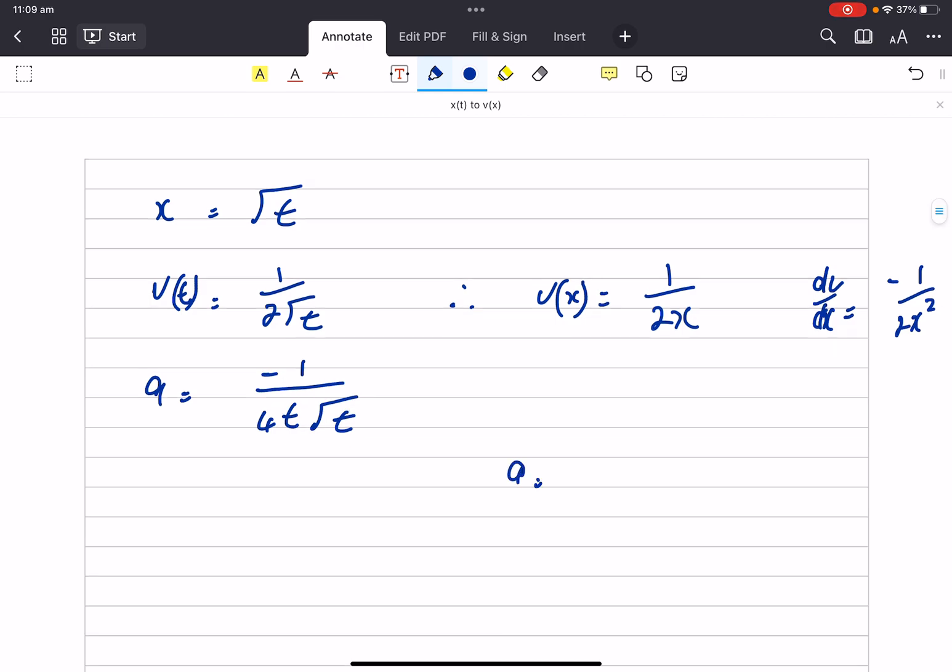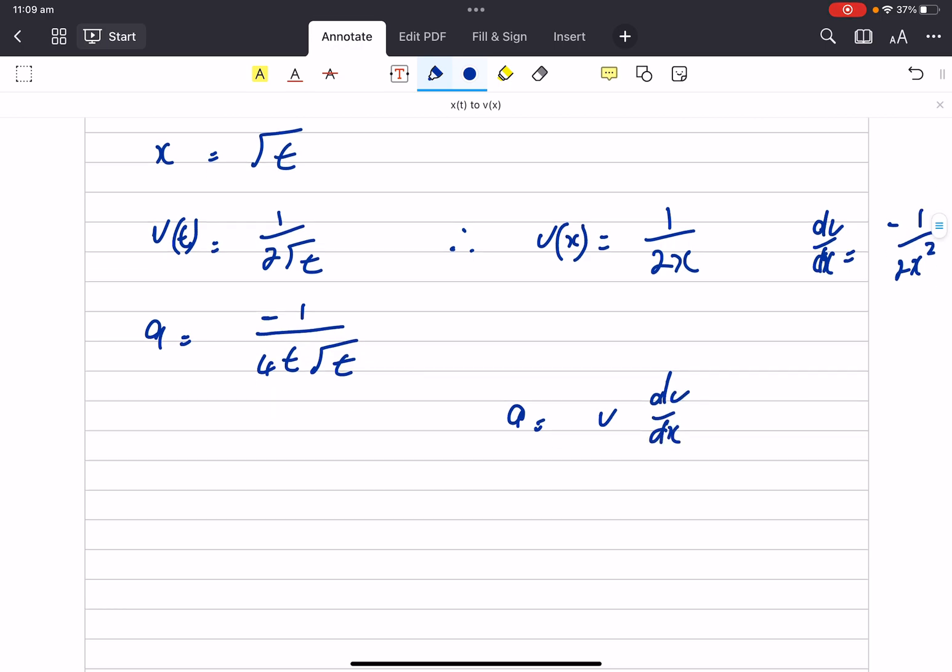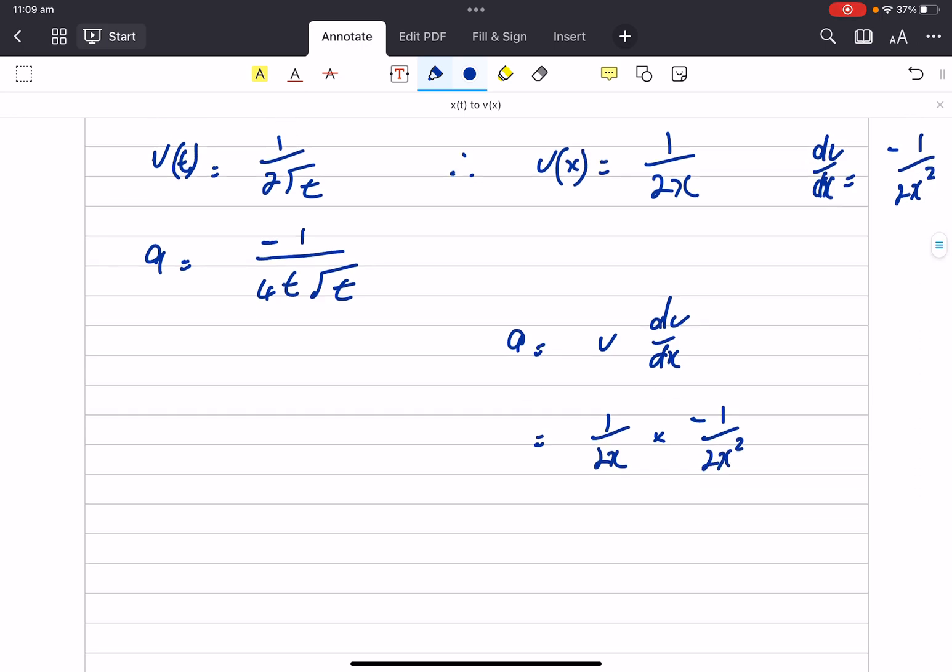Now, acceleration equals v dv/dx. We know v is 1 on 2x and we know dv/dx is minus 1 on 2x squared. So our acceleration displacement function becomes minus 1 on 4x cubed.